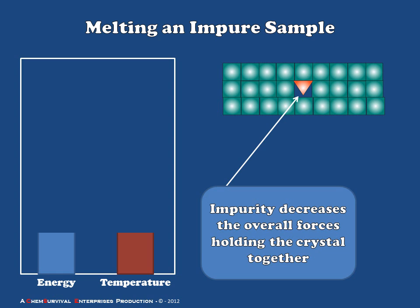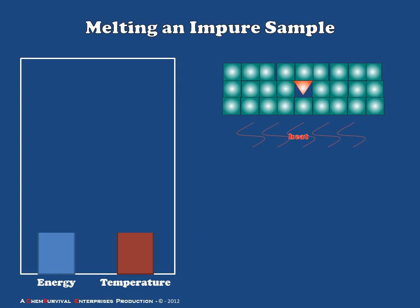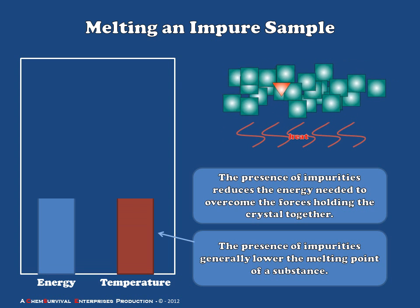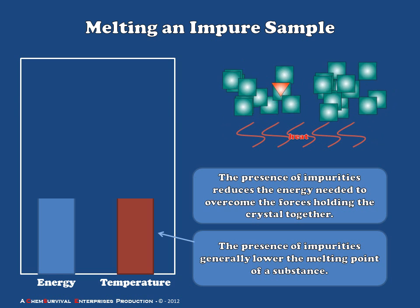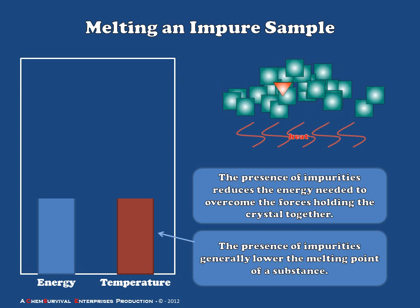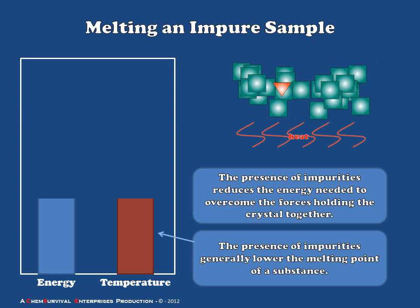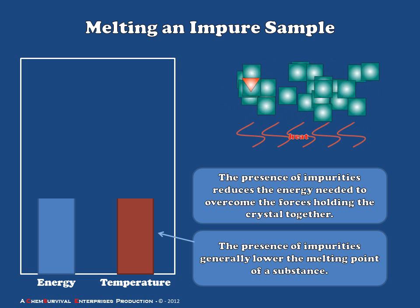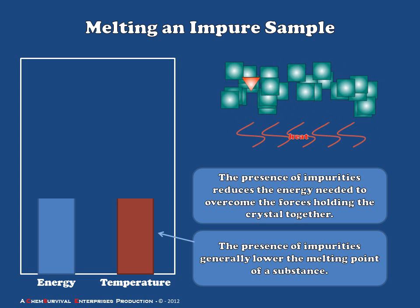Let's think about how this decreased overall attractive force within the crystal will affect its behavior as we heat it. As before, applying a little heat produces vibrations but is not adequate to overcome the attractive forces holding it in the solid phase. But at the next step, notice that it took less heat to reach a point where the thermal energy is adequate to overcome all the intermolecular forces. This is a direct result of the presence of the impurity and its reduced attractive forces with the rest of the crystal. For this reason, in most cases when an impurity is introduced into an organic crystalline solid, the melting point will be reduced — a phenomenon we refer to as melting point depression.